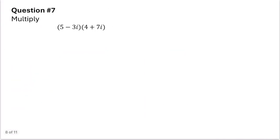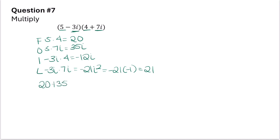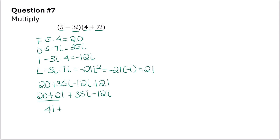In this problem it asks you to multiply two complex numbers. I prefer to use FOIL. First times first: 5 times 4 equals 20. Outside: 5 times 7i equals 35i. Inside: negative 3i times 4 equals negative 12i. Last: negative 3i times 7i equals negative 21i squared, which is negative 21 times negative 1, so positive 21. Adding all terms: 20 plus 35i minus 12i plus 21 simplifies to 41 plus 23i.